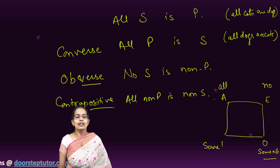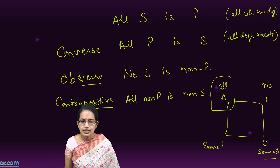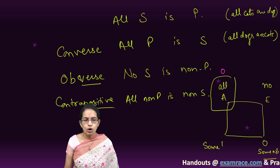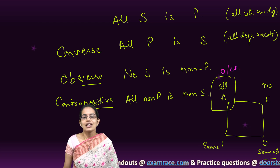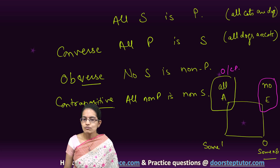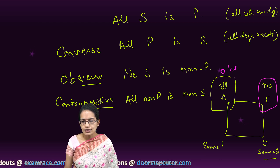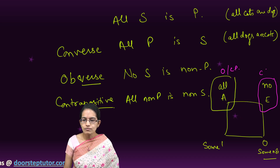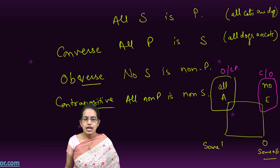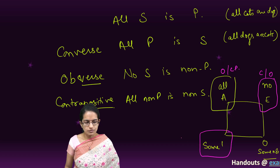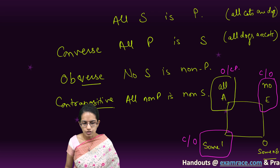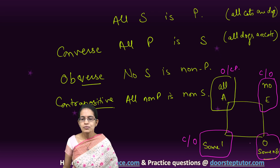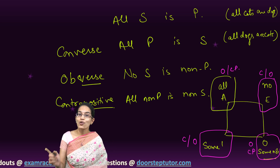Under 'all' (A), only two forms would be valid — the obverse and the contrapositive. When there is 'no' (E), the two valid forms are the converse and obverse. Under 'some' (I), two forms are valid — converse and obverse. And under 'some not' (O), the two valid forms are obverse and contrapositive.